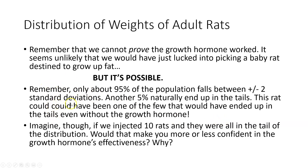Remember, only 95% of the population falls between positive and negative two standard deviations — another 5% naturally end up in the tails. So this one rat could have ended up in the tail even without the growth hormone. But if you injected 10 rats and they were all hovering around 450 grams in the tail of the distribution, that would make you much more confident. The likelihood of randomly picking 10 rats that all just happen to have fat genes is very unlikely — more likely is that the growth hormone actually worked.